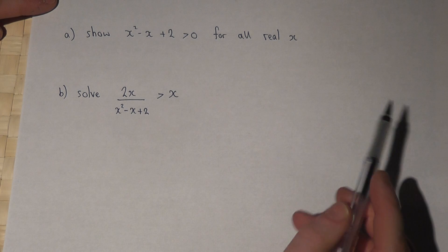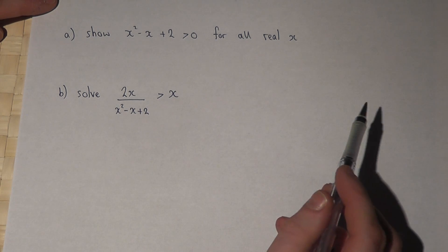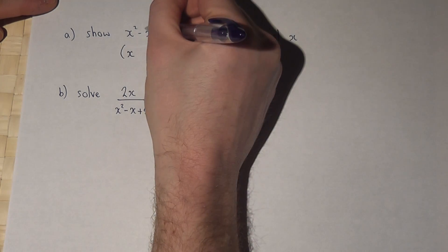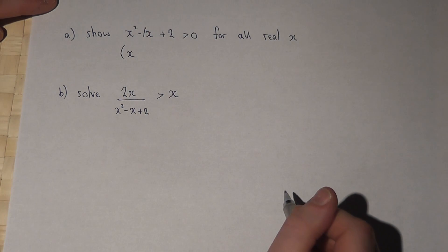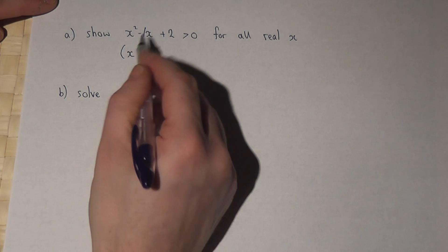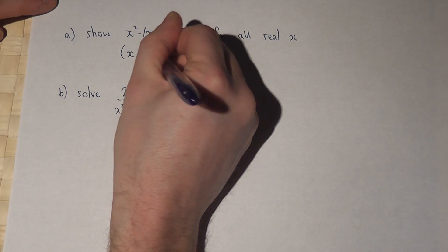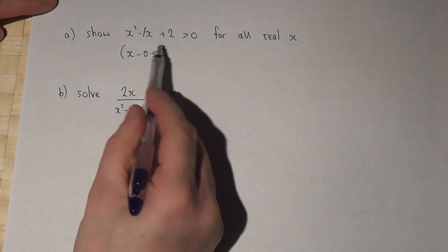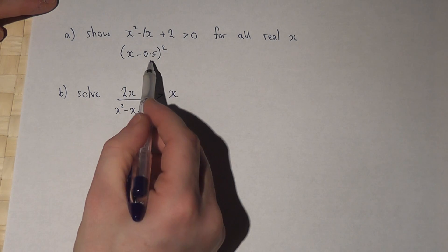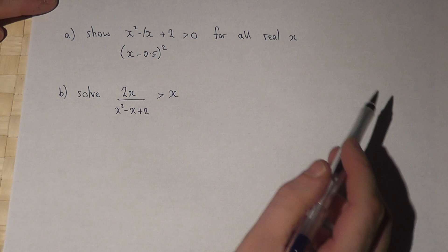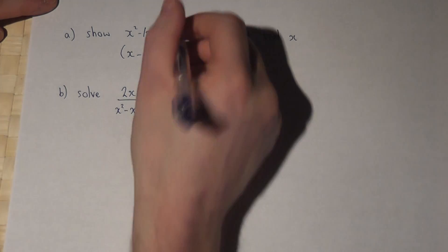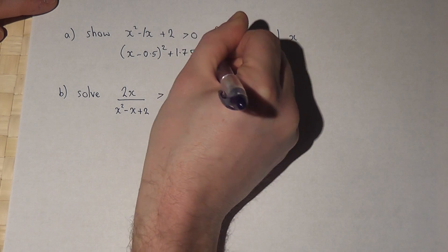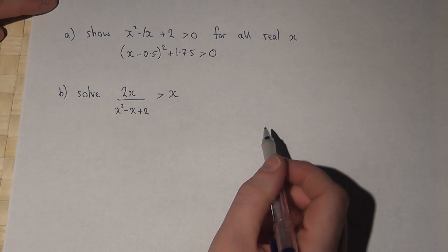Now there are lots of ways to show this, but one nice way is to complete the square. If I were to put an x, there's a minus 1 next to the x there. So if I halve that and get minus 0.5, I'll put a square. And this expands to x squared minus 1x plus 0.25. So I must add an extra 1.75 to make these two expressions equivalent.